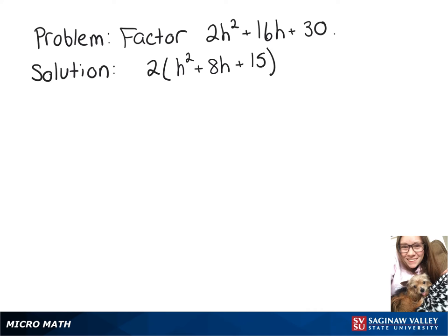And now we can factor the part inside the parentheses. So we want to think of two numbers that multiply to give us 15. So 5 times 3 gives us 15.